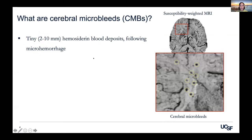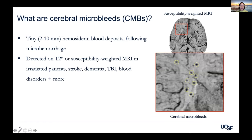Cerebral microbleeds are tiny hemosiderin blood deposits that appear after brain microhemorrhage. They're typically two to ten millimeters in size and are best detected on T2-star magnitude or susceptibility weighted images. They've been detected in a wide range of patient populations, including patients treated with radiation for a brain tumor, stroke, dementia, traumatic brain injury, blood disorders, and even healthy aging adults. They've been largely linked to cognition, and based on their biomarker potential, there's been a large interest in reliably quantifying them in an efficient manner.